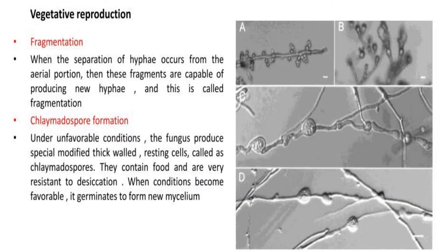Reproduction in Mucor occurs in all three types: vegetative, asexual, and sexual reproduction. In vegetative reproduction, it occurs by fragmentation and chlamydospore formation. In fragmentation, when separation of the hyphae occurs from the aerial portion, the fragments are capable of producing new hyphae.